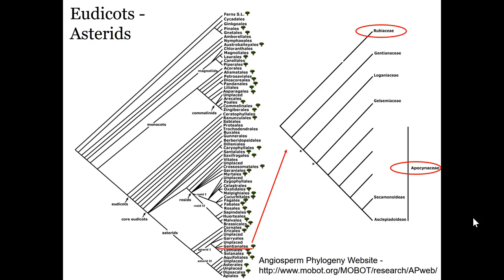We're going to finish up our tour of plant families with the asterid group — the remaining lineage in this phylogenetic tree. Remember, there aren't really that many ferns, cycads, ginkgos, or pines, so every tip of the tree doesn't indicate how many species are there. If we look just at the asterids, one-third of all angiosperm species are included in this group, so there's a huge amount of diversity left to talk about.